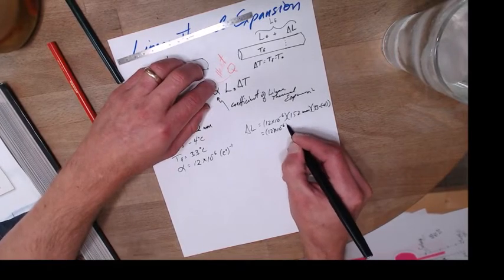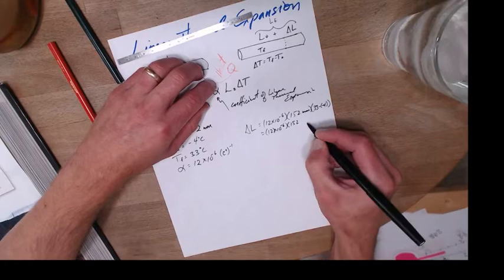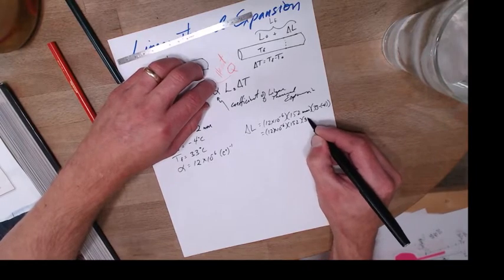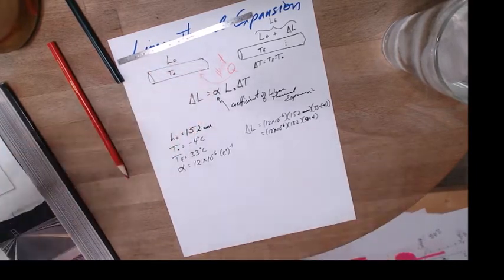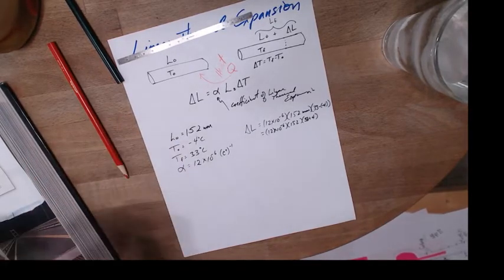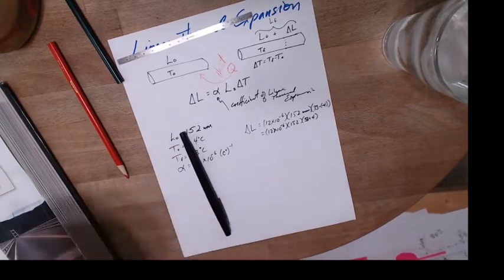12 times 10 to the minus 6, 152, 33 plus 4, that's 37. Well, if I was smart, I would have done this already, but I did not.